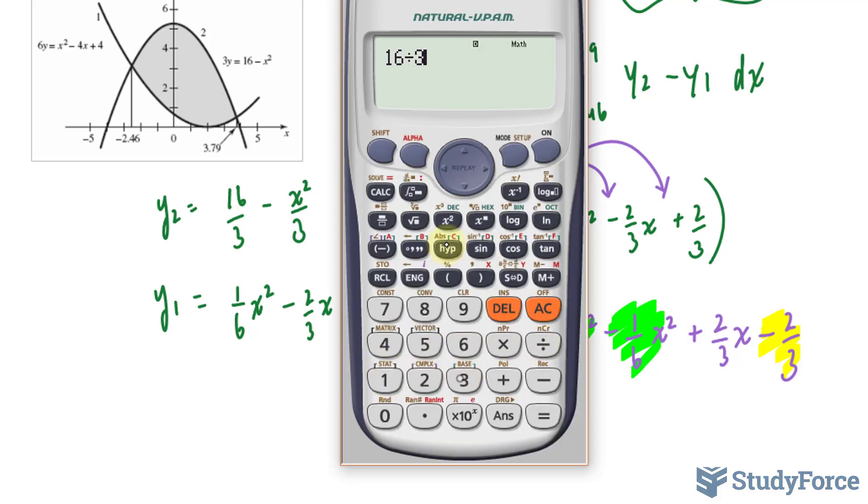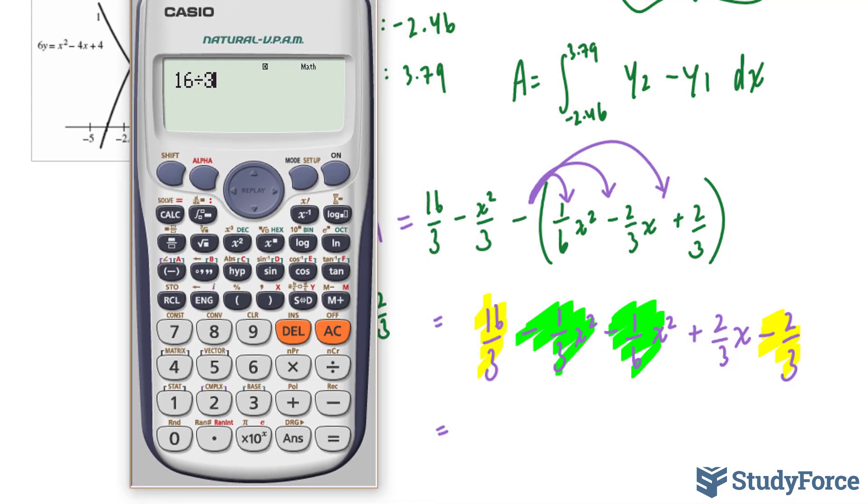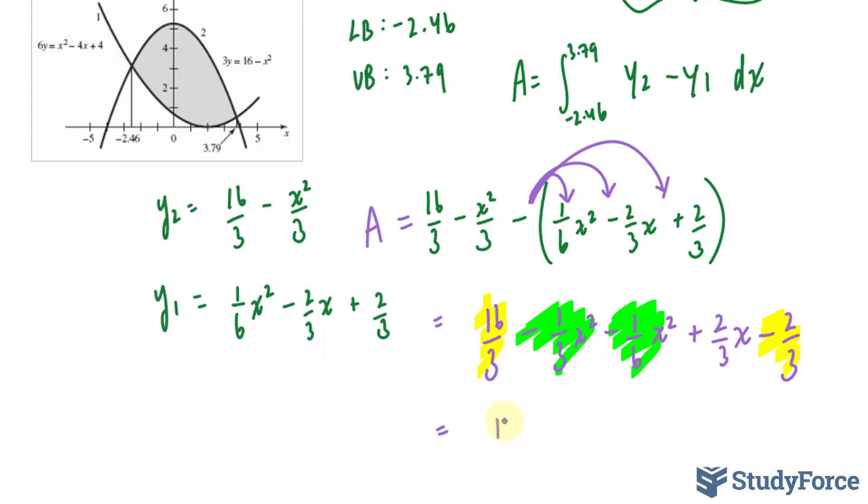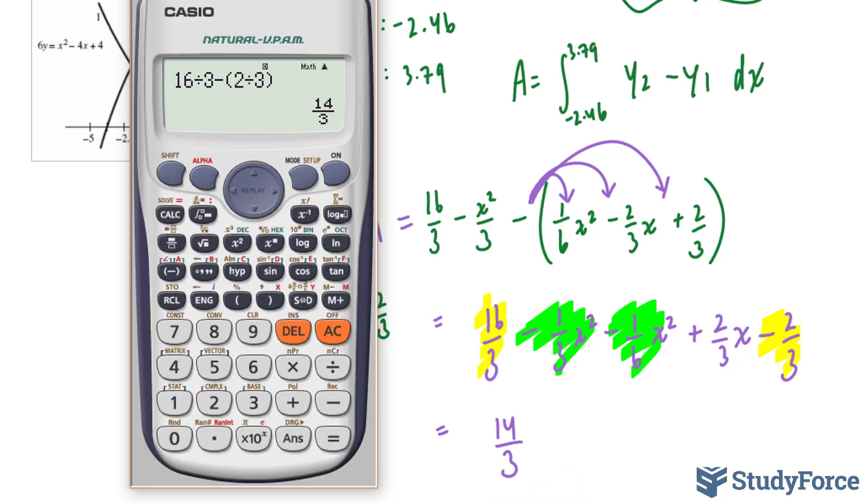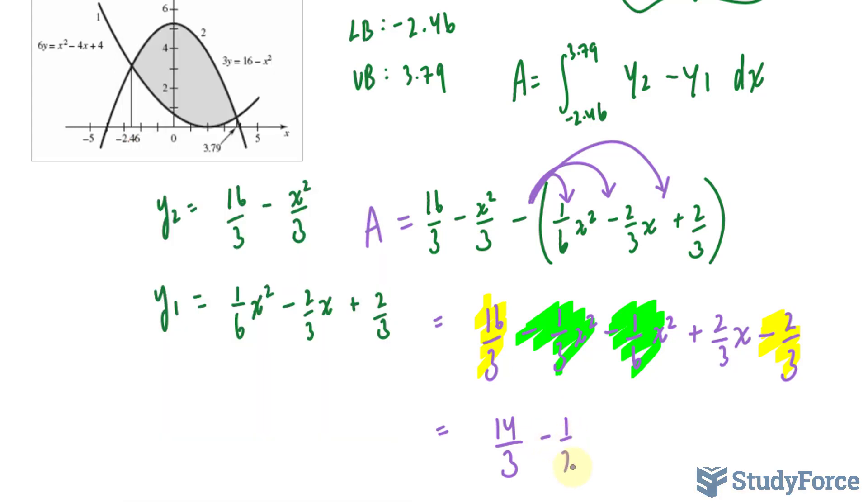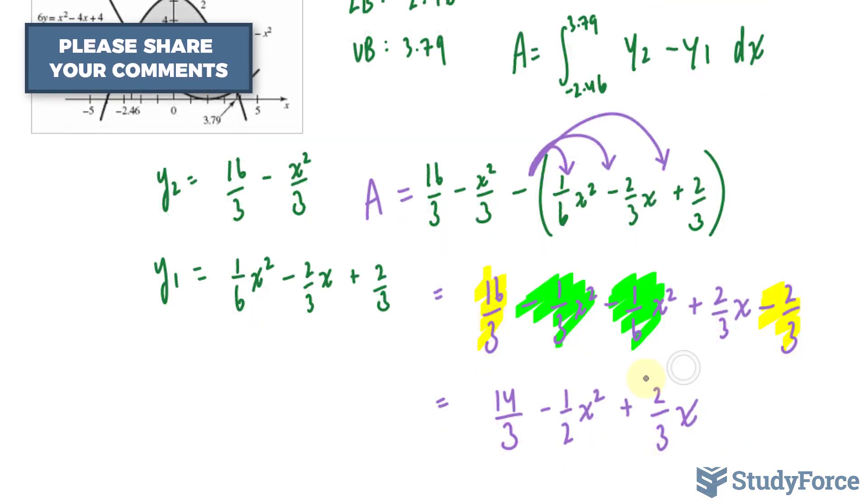Let's find out what these are equal to. We have 16 over 3 minus 2 over 3, that gives us 14 over 3. Let's combine these two coefficients. Negative 1 over 3 minus 1 over 6, that gives us negative half x squared. And this is on its own. Now I have to integrate the following function.